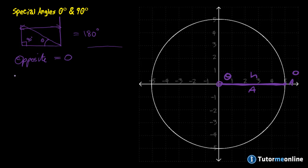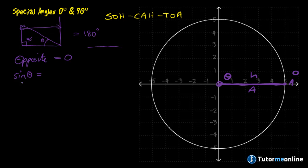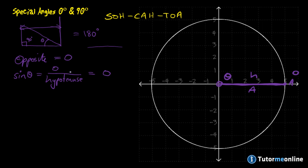So we can extend this using our SOHCAHTOA mnemonic to refresh our trig ratios. The sine of theta — in this case zero degrees — is the opposite side over the hypotenuse. Since the opposite is zero, we don't need a specific value for the hypotenuse, because any fraction where the numerator is zero is of course zero. So we know that the sine of zero degrees is equal to zero.